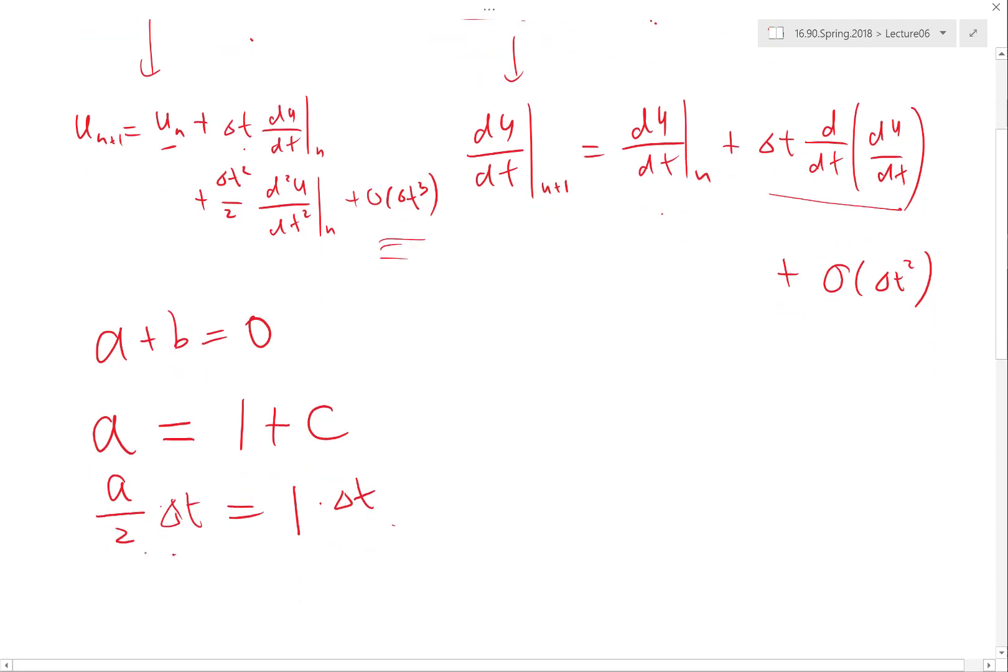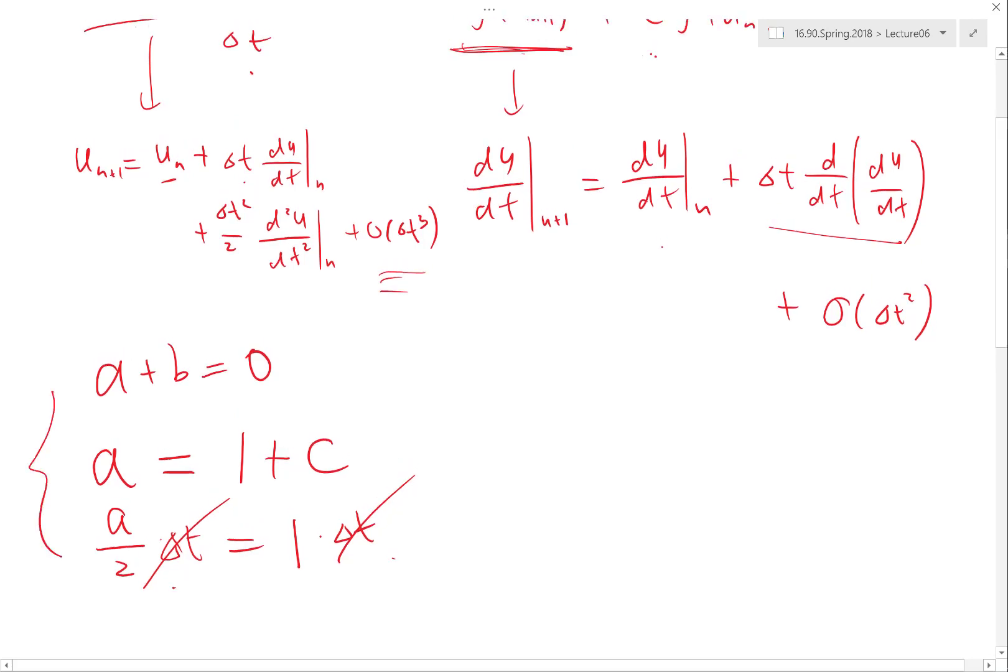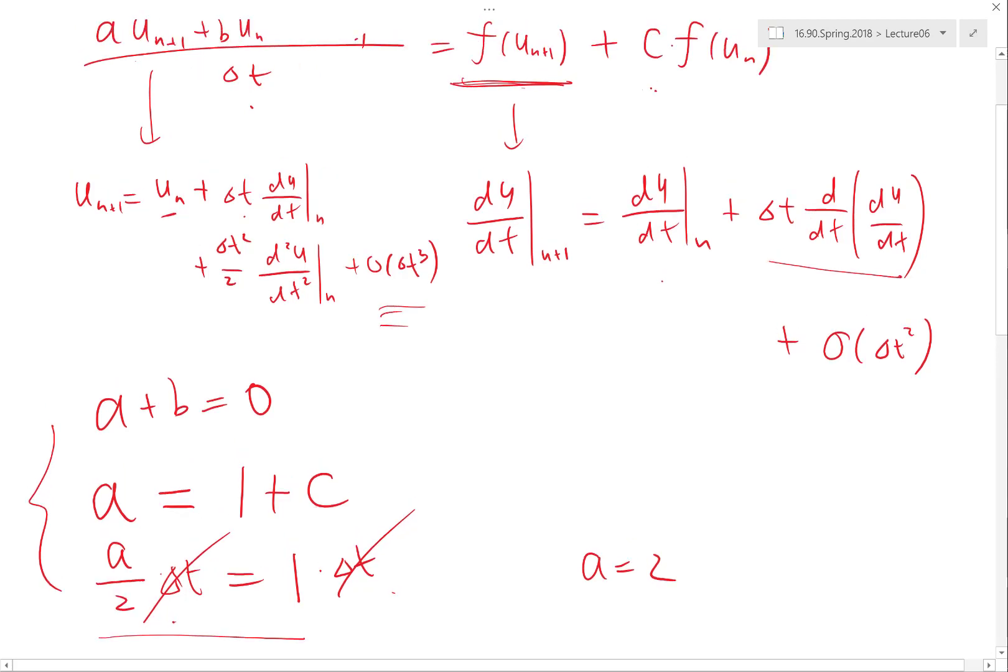Because I have delta t on both sides, it cancels. So these are the three equations I have, and I don't think I even need to go to MATLAB to solve that because this directly tells me a has to equal two. And the second line tells me c has to equal one, and b equals negative two.